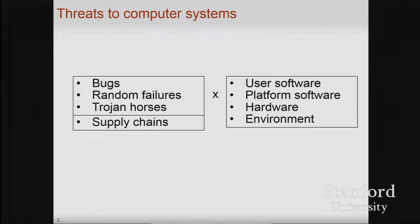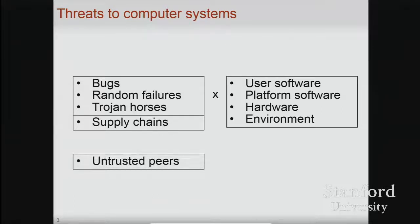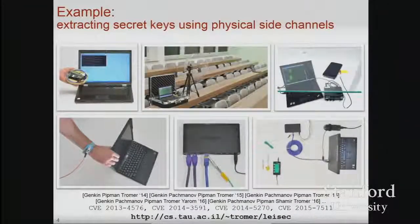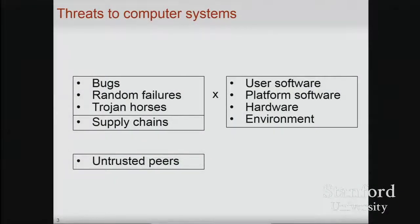Moreover, in the most extreme case, we have scenarios when we're not supposed to trust anyone. We might be in a network of peers that may be adversarial to us in a game-theoretic, economical, or national sense. Each of these can compromise the integrity, confidentiality, and availability of the information produced on these systems.